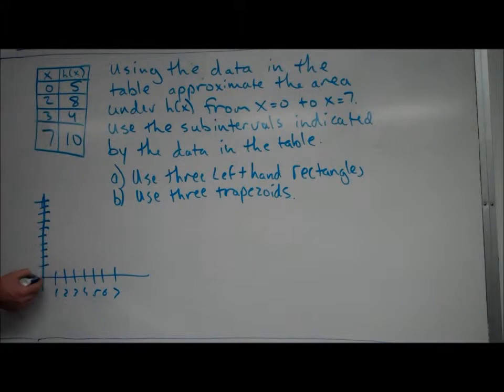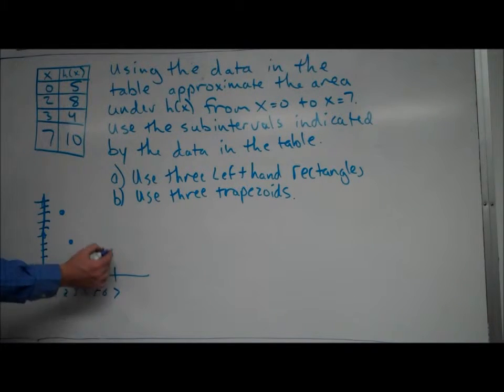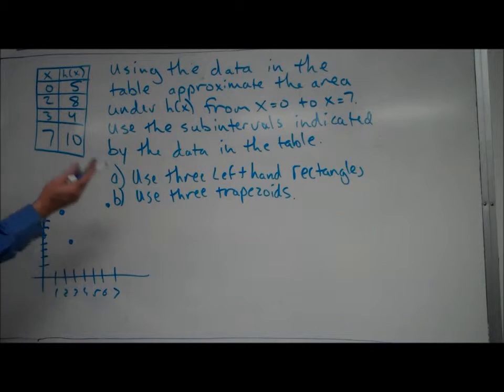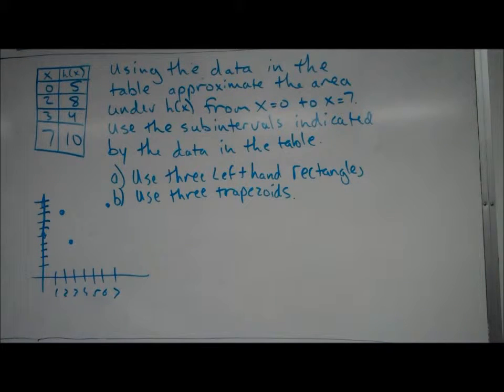Alright, so my first point is at 0, 5. My second point is at 2, 8. My next point is at 3, 4. And my last point is at 7, 10. So that's all I know about the graph. They haven't told me anything else but that. Based on that, I've got to do this approximation.